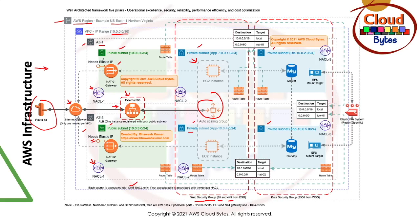NAT gateways are a zonal or availability-zone-specific resource. If you have more than one AZ, you can route traffic through a single NAT gateway, but it is always better to have a NAT gateway per AZ to avoid cross-AZ data charges and other complications. Looking further, you can see the route tables for the public subnets — both these route tables associated with public subnets have an entry for the internet gateway.